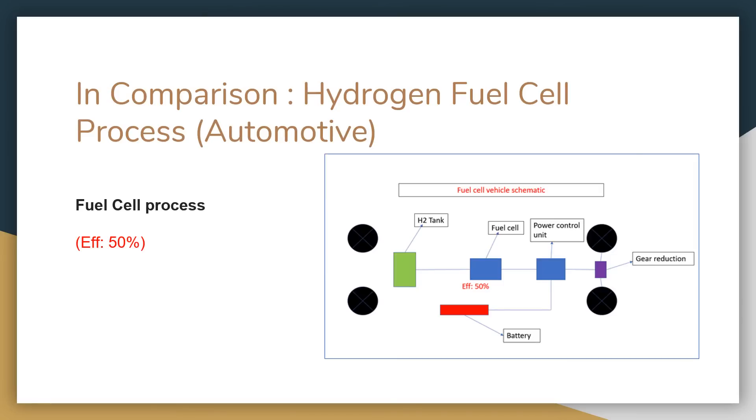And so if we actually take a look at the process, we see that this actually has an efficiency of 50%. And we're actually using mostly electrical components here. We're using our H2 directly to a fuel cell, then to a power control unit, which then goes to a gear reduction, a lot different from your standard heat cycle like we saw with our hydrogen combustion engine.